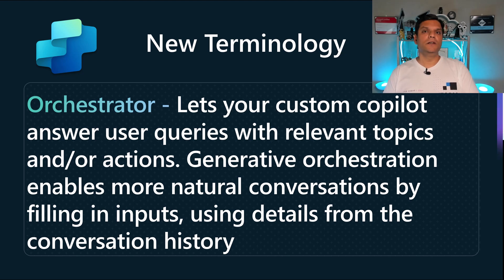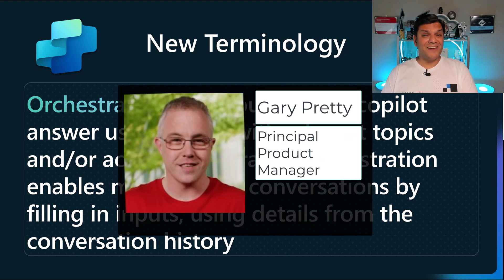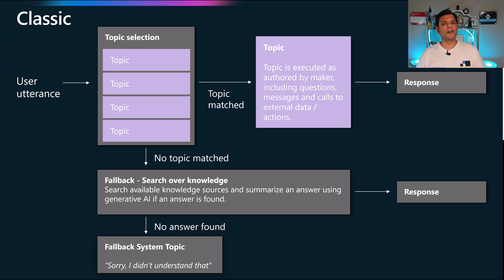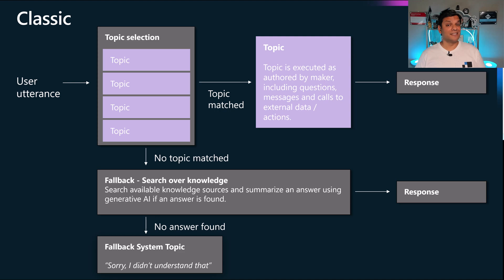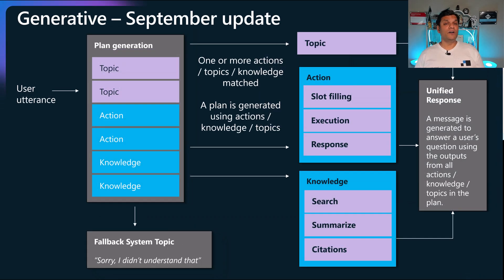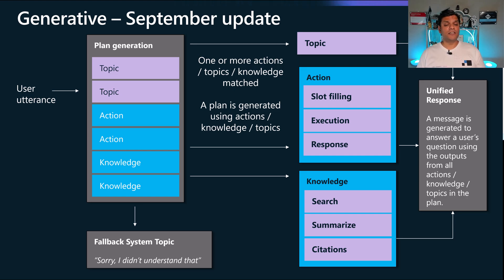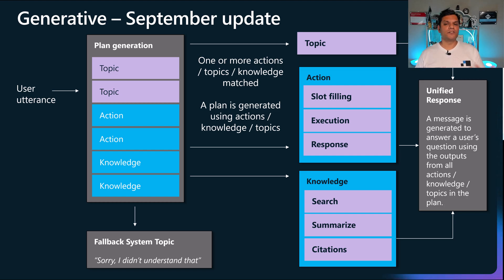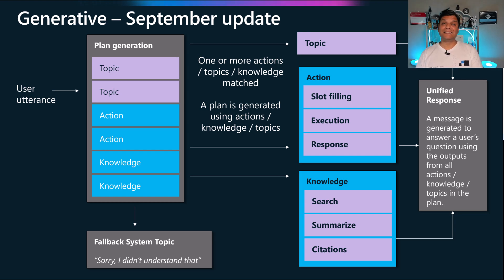The must-attend session to learn about the orchestrator was the one by Gary Preddy, the principal product manager of that section of Copilot Studio. He went through it step by step. He started by talking about how the classical interface works — how the topic gives you information when you're having a conversation using utterances. However, the new design using the orchestrator and its generative reactions brings more automation. As of September, this is the update. There is still the same design of topics and utterances, but the generative AI using the RAG model gets you much more accurate answers using a combination of topics, actions, and the knowledge you built inside the Copilot Studio agent.